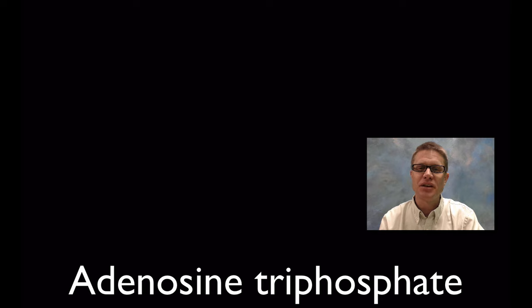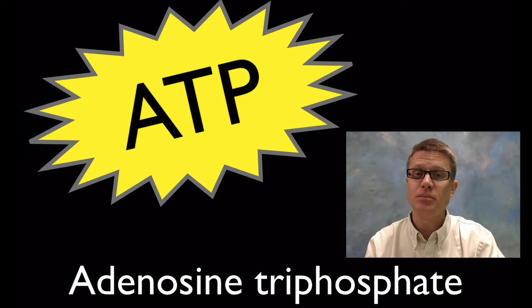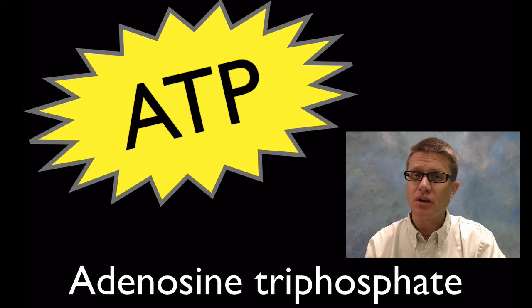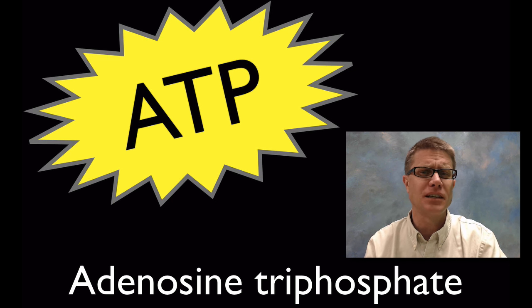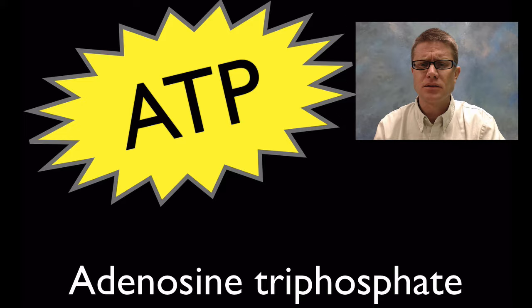Hi, it's Mr. Andersen and in this video I'm going to talk about adenosine triphosphate, otherwise known as ATP. ATP is usually shown with a yellow starburst behind it, because it contains energy — in fact it's the energy coinage of all life on our planet. Most of you probably know that, but you might not know the structure of ATP.